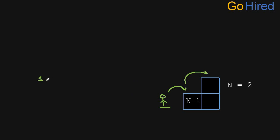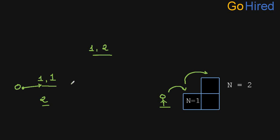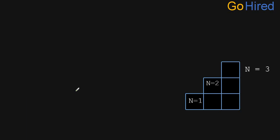One way is you take the first staircase and then another, because only one or two jumps are allowed at a time. Another way is you can reach to 2 directly with one jump. So when you are at 0, you can either go to 1 and then reach to 2, or you can directly reach to 2 — two possible ways.